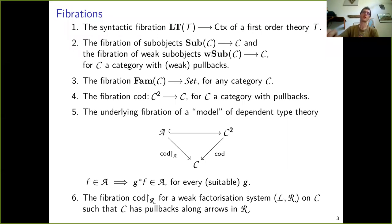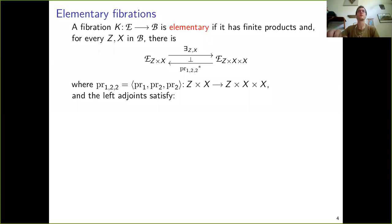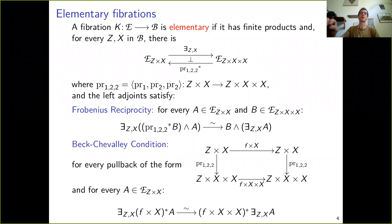We shall be especially interested in fibrations of the form cod restricted to a class R, where the class R is part of a weak factorization system on the category C. A fibration with finite products is elementary if it has left adjoints to re-indexing along parameterized diagonals — diagonals with an additional parameter z. I will use a compact notation for lists of product projections throughout the presentation. These left adjoints are required to satisfy Frobenius reciprocity and the Beck-Chevalley condition, which are standard.